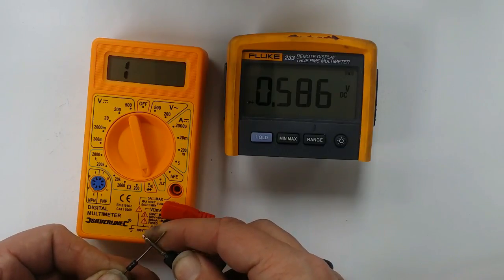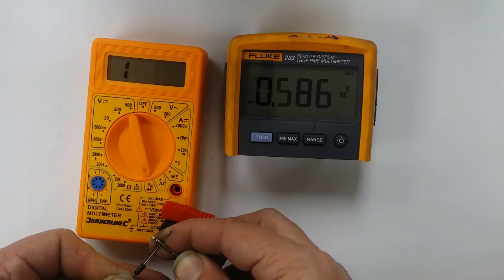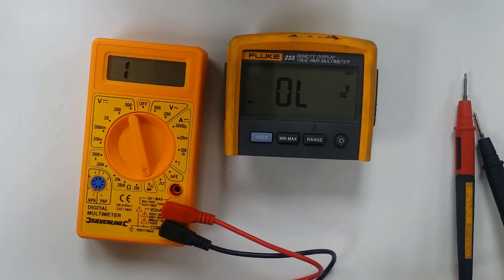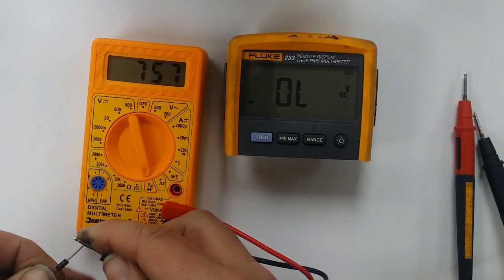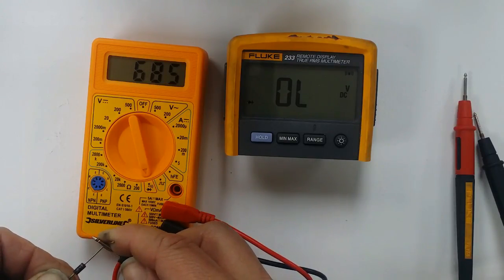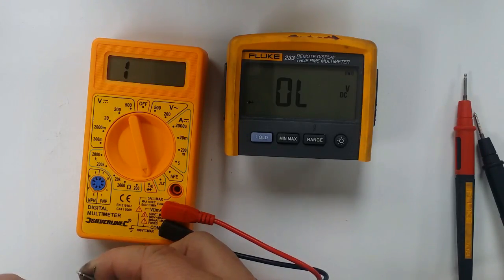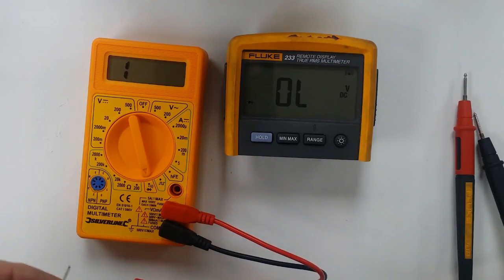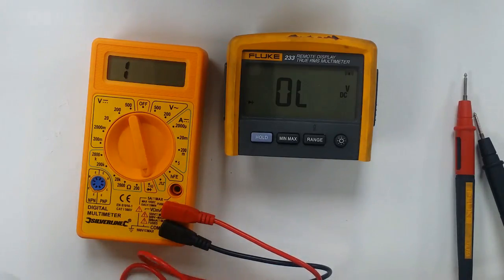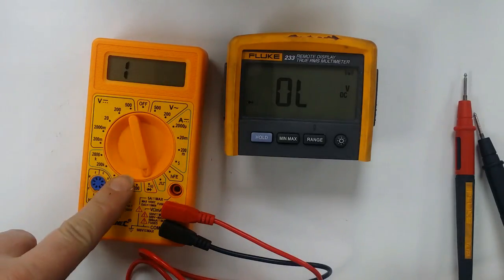Okay, on the diode, the actual drop is 0.586 volts. I don't know if this is going to show the same. Okay, it's obviously showing in millivolts instead of volts. And yeah, there's a little bit of an error there. Nothing to worry about. It's doing its job. It's checking the diode, which is good.